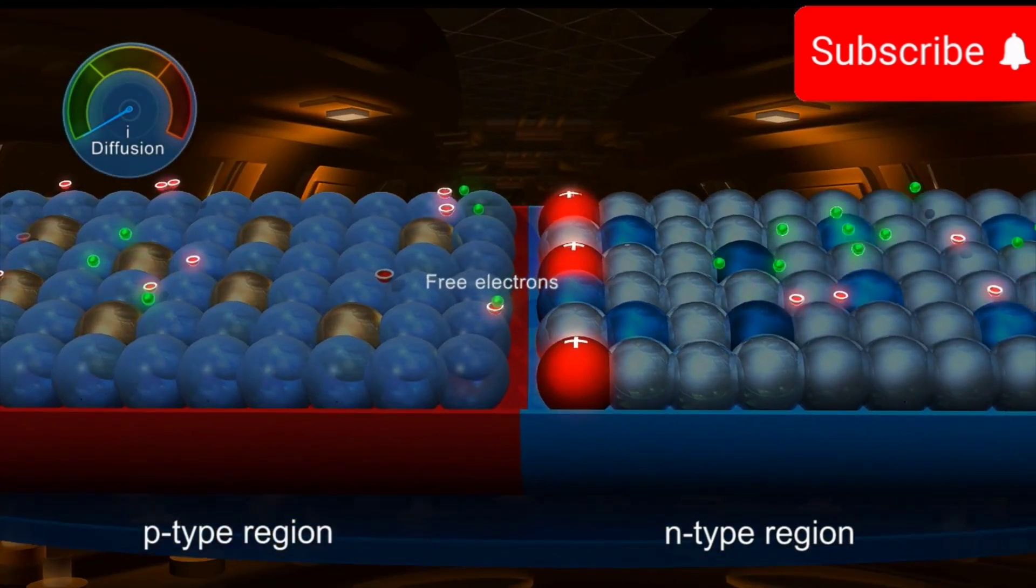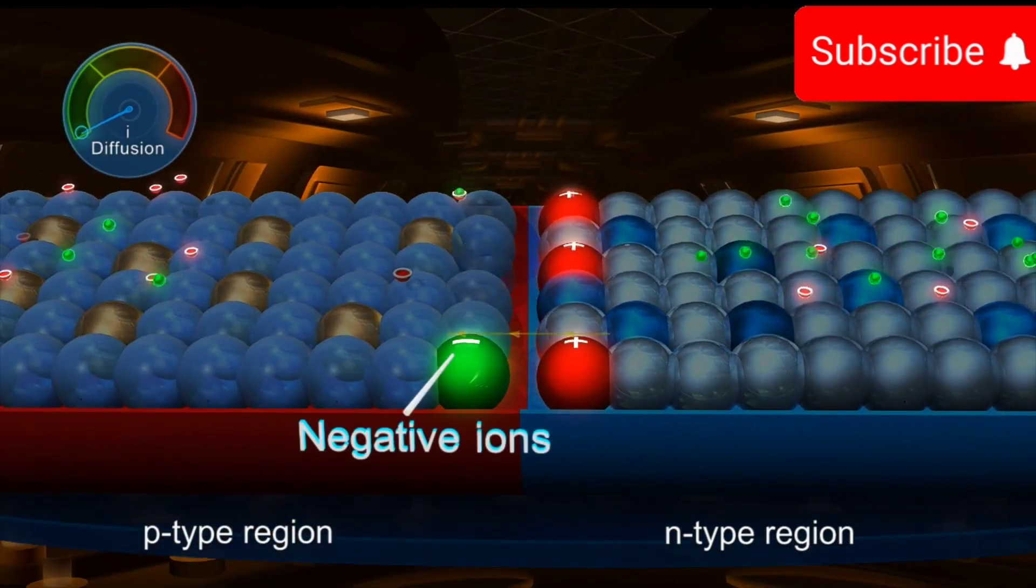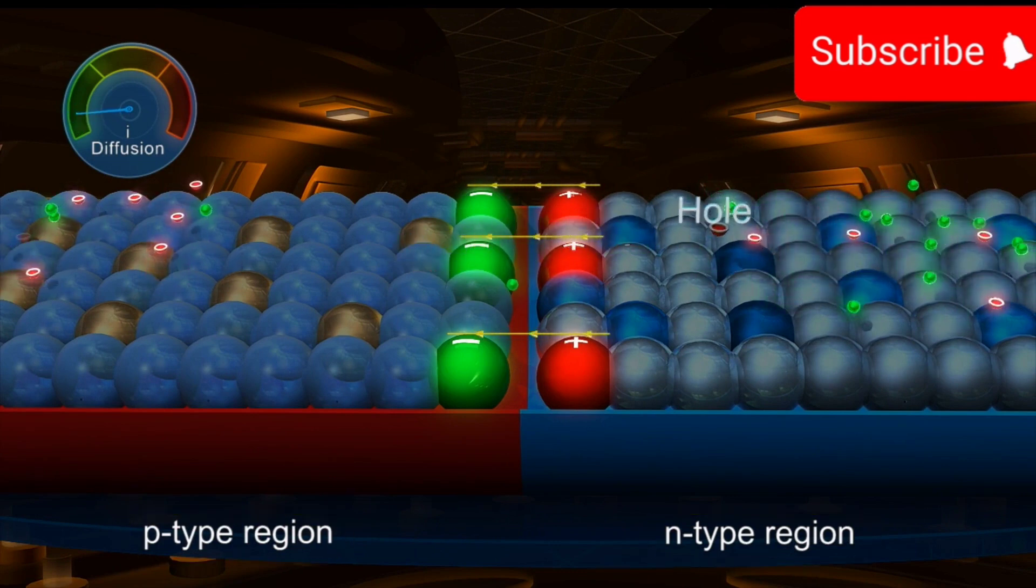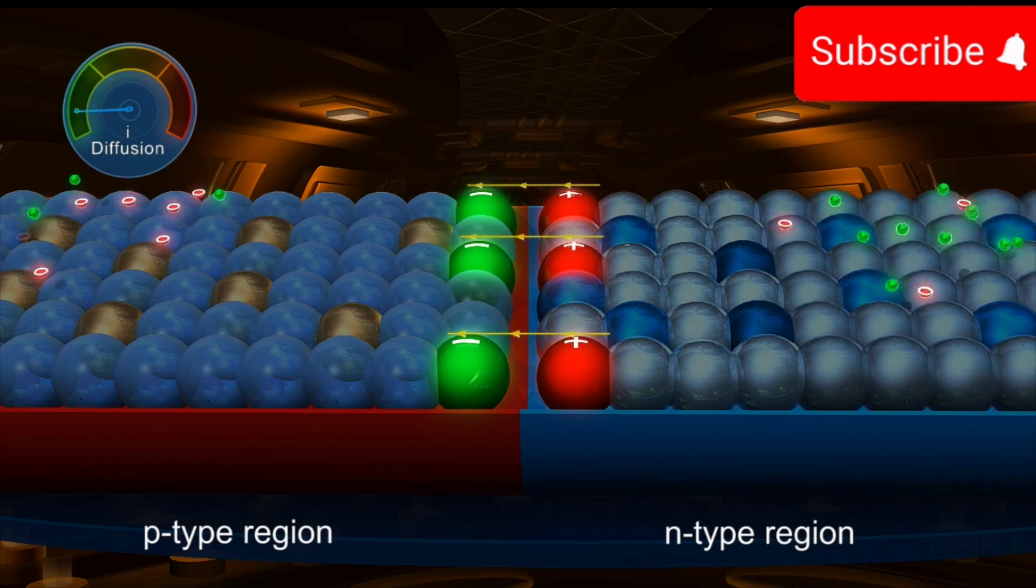On arriving at the P-side, they give rise to negative ions near the junction. The holes in the P region appear to diffuse into N region, leaving behind a negative immobile ion.